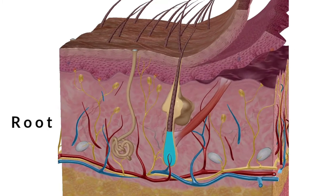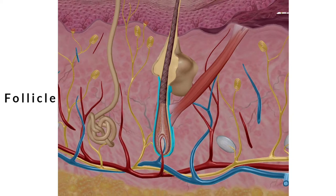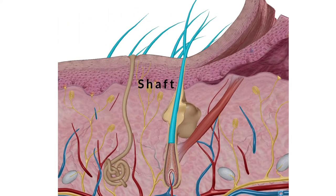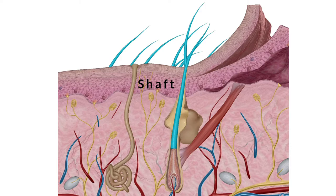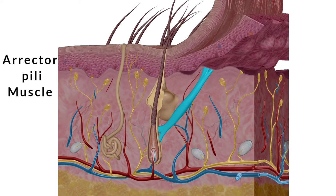The labeled structures on the diagram are: hair root, follicle, shaft, and erector pili muscle.